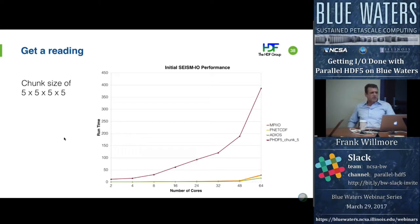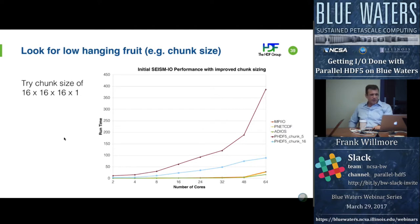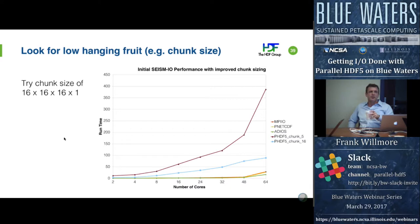First thing we did was look for low-hanging fruit: try a chunk size that's larger and has more pleasing alignment. We moved from 625 elements to 4,096 elements, and immediately saw quite a bit of improvement. It turns out chunk size was a very important issue. This was just the first pass at making an improvement, on their code before we got into developing a kernel for it. Low-hanging fruit.